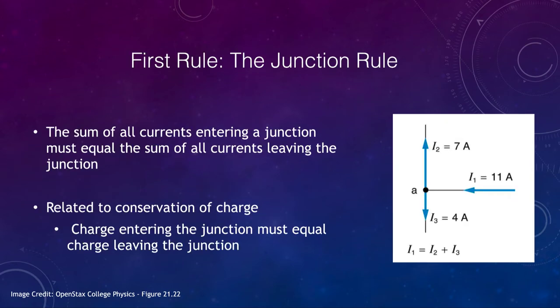Let's start off with the first one. The first rule is the junction rule, and the junction rule states that the sum of all currents entering a junction must equal the sum of all currents leaving the junction. Now hopefully that may make common sense, that you have a certain amount of current coming in, and therefore, when it splits, you'll have a certain amount going this way, and a certain amount going this way. Now they do not have to be equal, but they have to add up.